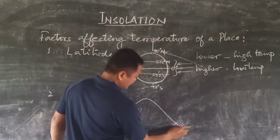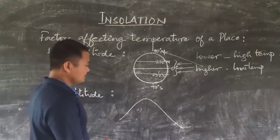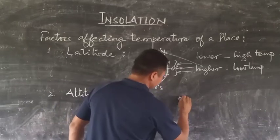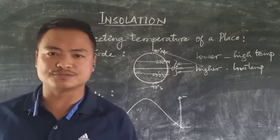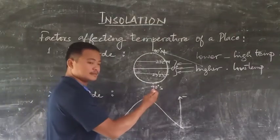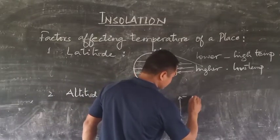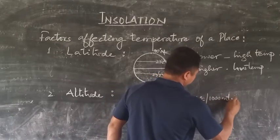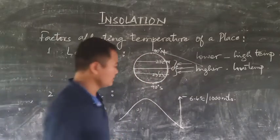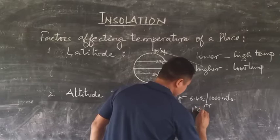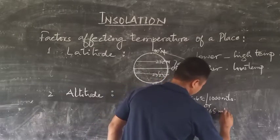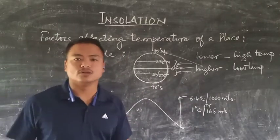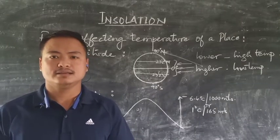In the tropospheric layer of the atmosphere, with an increase in height, temperature tends to decrease. The rate at which temperature decreases is 6.4 degrees centigrade for every 1000 meters we climb, or 1 degree centigrade for every 165 meters as we go higher. This is known as the lapse rate.